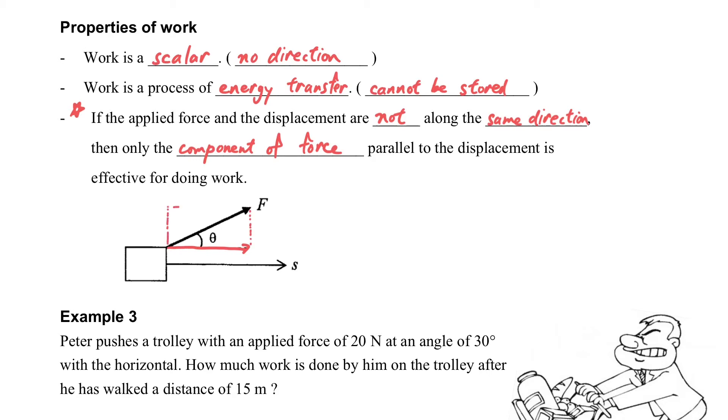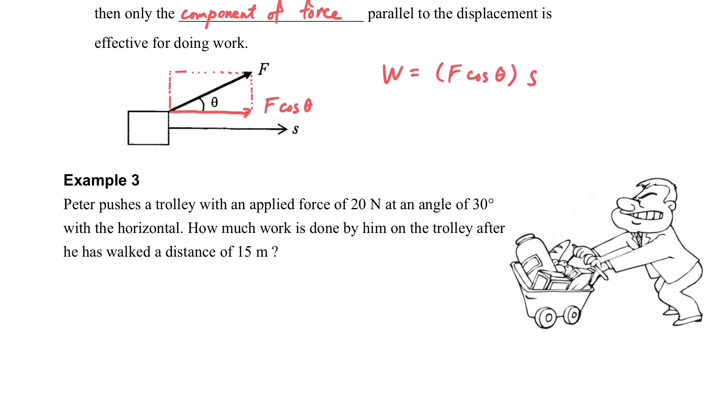So we had to break it into components, and we just focus on the horizontal component, which is F cosine theta. So our work here is W equals F cosine theta times S.